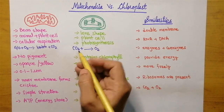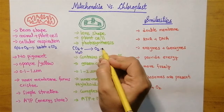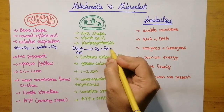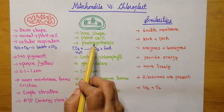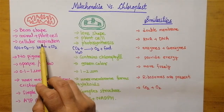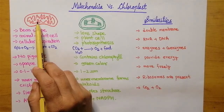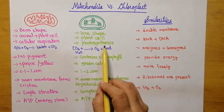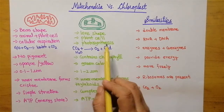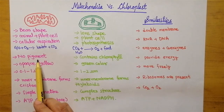Photosynthesis is the reverse process of cellular respiration. In photosynthesis, carbon dioxide is utilized and oxygen is eliminated. This carbon dioxide along with water forms the food. So photosynthesis is actually the reverse process of respiration. In mitochondria respiration takes place, while in chloroplast photosynthesis takes place.